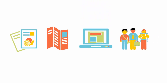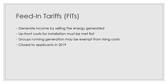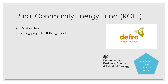As the community energy movement grows, so did the organisations and systems in place to support it. The feed-in tariffs scheme was a system whereby communities could generate income by selling the energy generated. They had to meet the upfront costs but then could be exempted from rising fuel costs. The feed-in tariffs system was incredibly successful, however it closed to new applicants in 2019. Currently running is the Rural Community Energy Fund, a £50 million fund by DEFRA and the Department for Business, Energy and Industrial Strategy, which focuses on getting new projects off the ground by funding feasibility studies and planning permission applications.